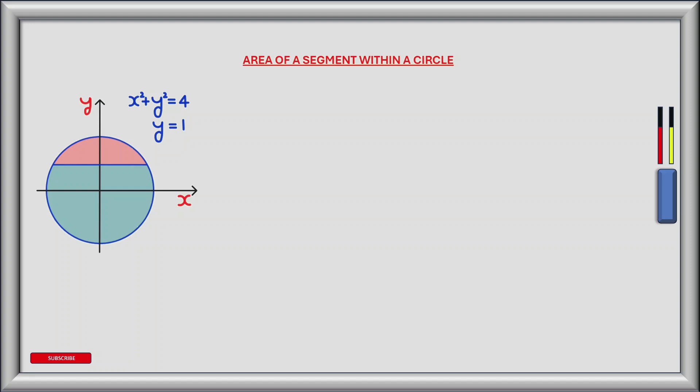The equations of the horizontal line and circle are shown in Cartesian coordinates. The equation of the circle is x squared plus y squared equals 4, and the equation of the horizontal line is y equals 1. The circle has a radius of 2 and is centered at the origin, and the horizontal line cuts the y-axis at y equals 1.